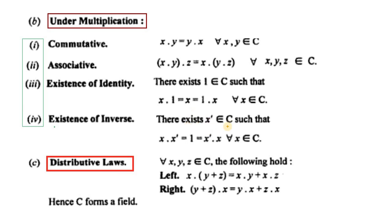Existence of inverse: there exists x' in C such that x·x' = 1 and x'·x = 1 for all x belonging to C. Set C کے ہر member کا multiplicative inverse exist کرتا ہے — یعنی set C is closed and multiplicative inverse exists in C.